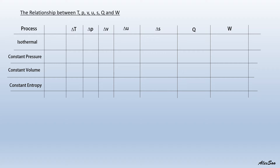Based on the isothermal process, we have the law PV equals to C, which is Boyle's law. For constant pressure, we have V over T equals to constant. For constant volume, we have P over T equals to constant. And for constant entropy, we have PV to the power of gamma equals to C.